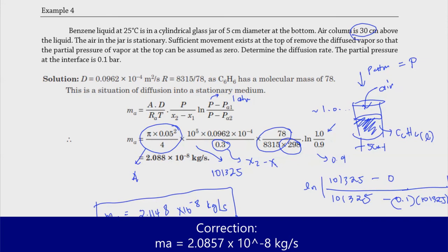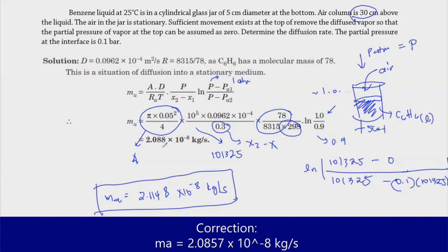The slight difference in the answer compared to the book solution arises because the problem's solution used 1 bar = 10⁵ Pa instead of 1 atm = 101,325 Pa, since the partial pressure was given in bar. The difference is small but it is worth using the exact value. Both approaches give results close to each other.